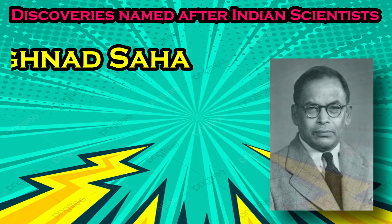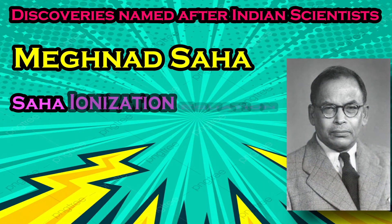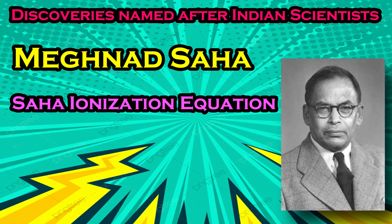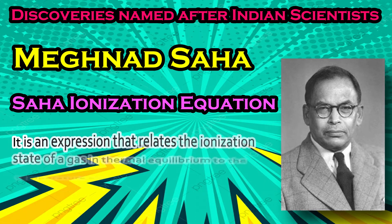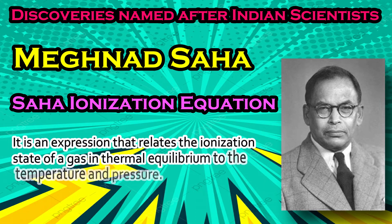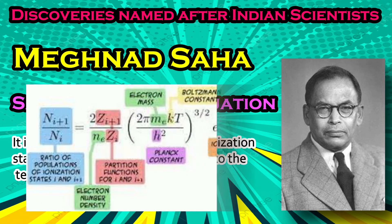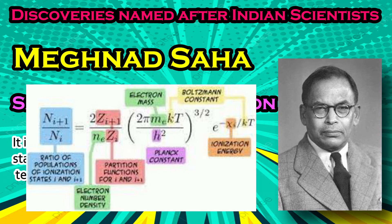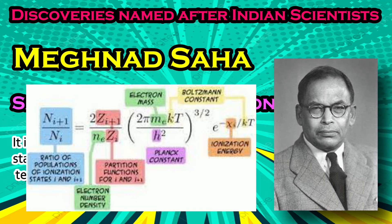Meghnad Saha has the Saha ionization equation named after him. It is an expression that relates the ionization state of a gas in thermal equilibrium to the temperature and the pressure. Meghnad Saha was an Indian astrophysicist whose work allowed astronomers to accurately relate the spectral classes of stars to their actual temperatures.